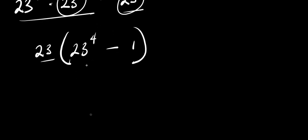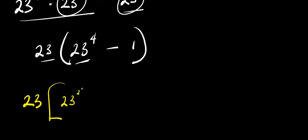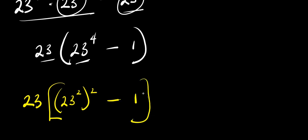Now we can express 23 to the power 4 as 23 to the power 2, all to the power of 2. So we have 23 times, in brackets, 23 to the power of 2, all squared, minus 1. Now we can also raise this 1 to the power of 2, because 1 to the power 2 is still 1.